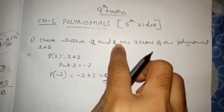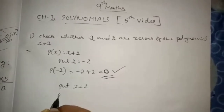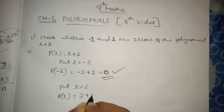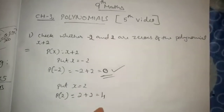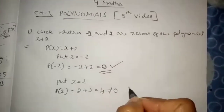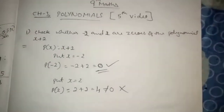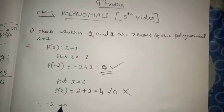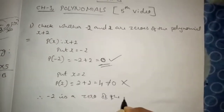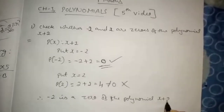Then we will check for p of 2. Put x equals to 2, so p of 2: in the place of x we put 2, so 2 plus 2 equals 4. So 4 is not equal to zero. Therefore minus 2 is a zero of the polynomial x plus 2.